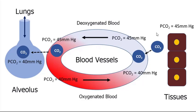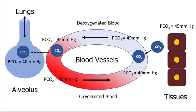Now let's look at carbon dioxide — it's really the same process. The PCO2 in the tissues is highest because that's the source of carbon dioxide, at about 45 millimeters of mercury. To move carbon dioxide from the cells and tissues into the blood, the PCO2 of the blood has to be less — the PCO2 of oxygenated blood is about 40 millimeters of mercury. This gives us a partial pressure gradient, so carbon dioxide moves from 45 to 40 via diffusion, raising the blood PCO2 up to 45. Carbon dioxide is carried mostly via the bicarbonate ion over to the lungs.